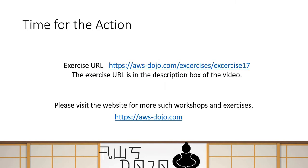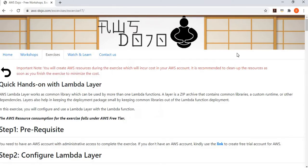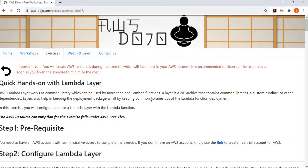In order to run this exercise, we have uploaded it to our website aws-dojo.com. The URL of this exercise has been provided in the description box below. You can follow the instructions to implement the scenario. In the remaining part of this video, I'm going to quickly show you what steps are involved to implement this scenario. So let's go to our website. This is aws-dojo.com, where we have published this exercise about Lambda layers.